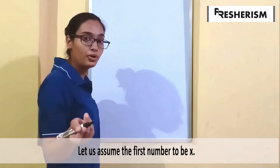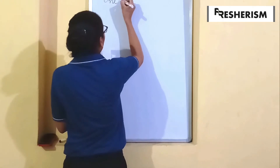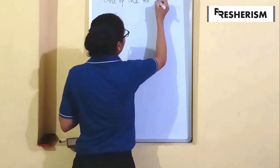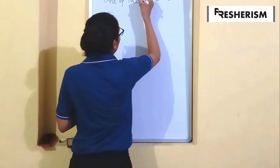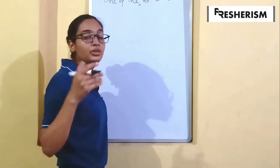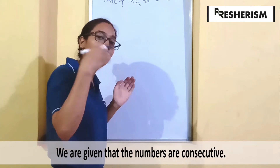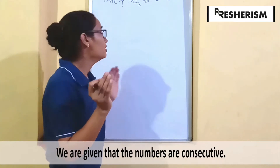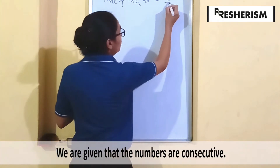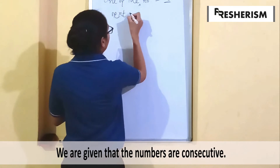Let us say one of the consecutive odd numbers is x. So one odd number is equals to x. As it is given the numbers are consecutive — consecutive means one after the other, ek ke baad ek.